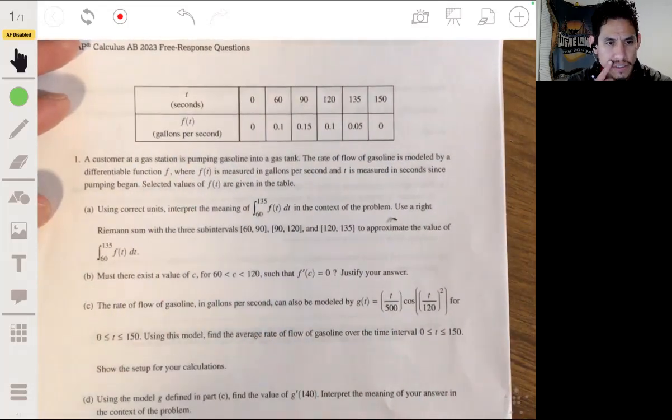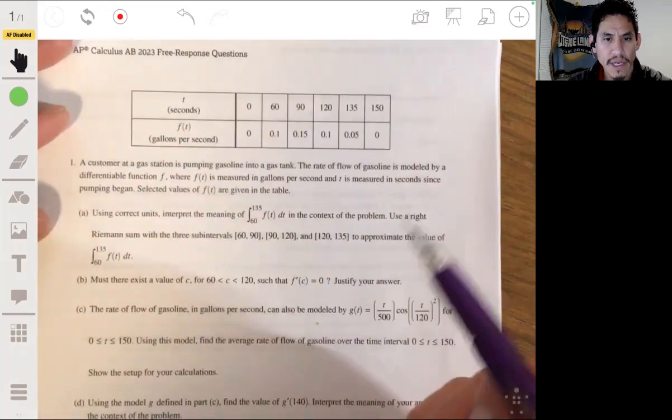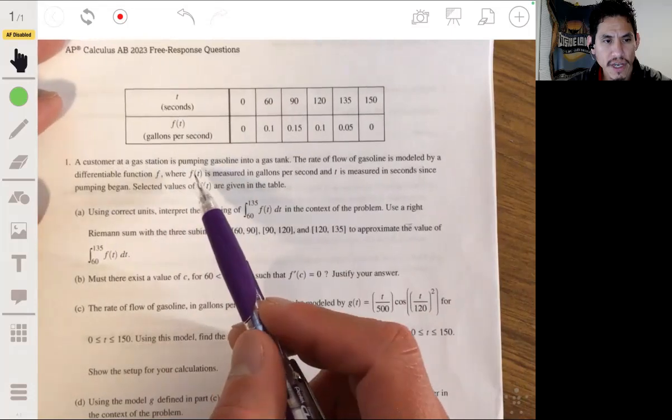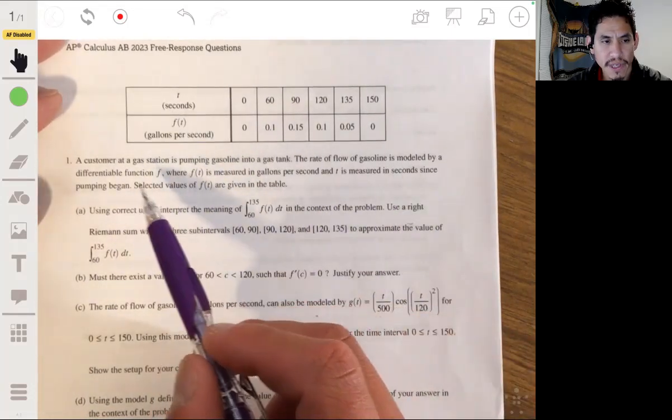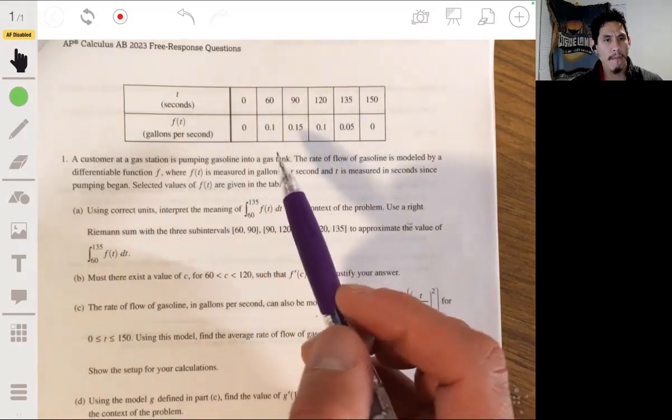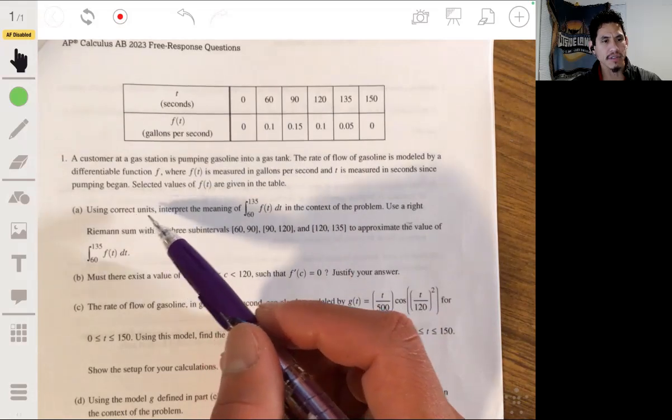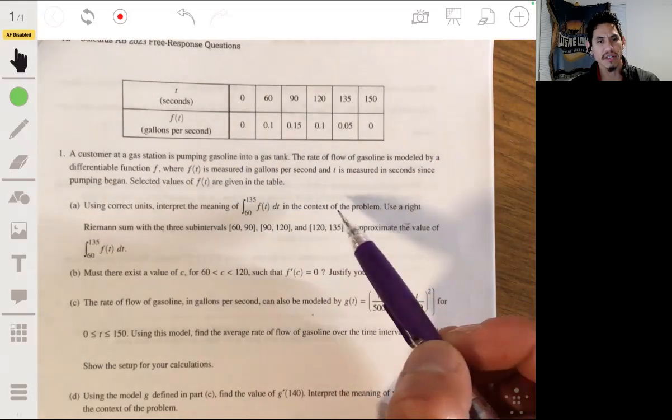So we got a customer at a gas station pumping gasoline to a gas tank, and the rate of flow of gasoline is modeled by a differentiable function f, where f(t) is measured in gallons per second, and t is measured in seconds since pumping began. Selected values of f(t) are given in the table. Using correct units, interpret the meaning of the integral from 60 to 135 of f(t)dt in the context of the problem.